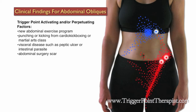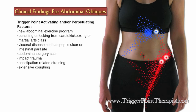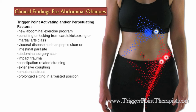Visceral disease such as a peptic ulcer or intestinal parasite will also activate these trigger points. A scar resulting from abdominal surgery, impact trauma directly to the abdomen, straining related to constipation, extensive coughing, and emotional stress are all significant factors. Prolonged sitting in a twisted position also activates these trigger points by causing sustained contraction and overload of that particular muscle.